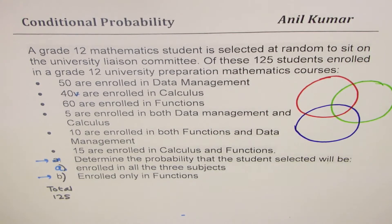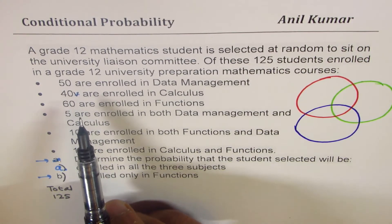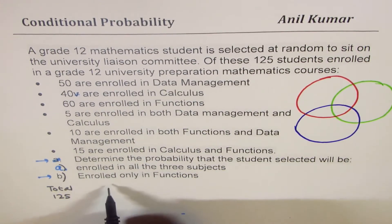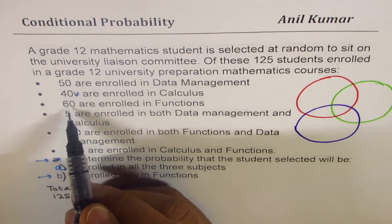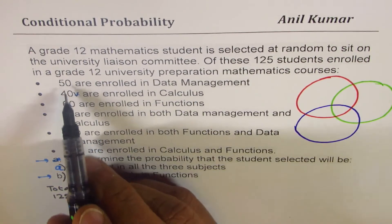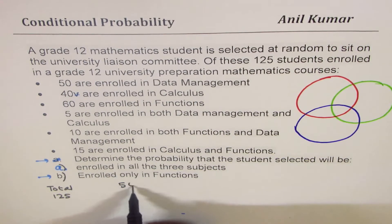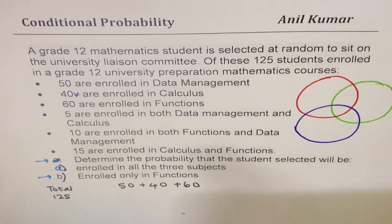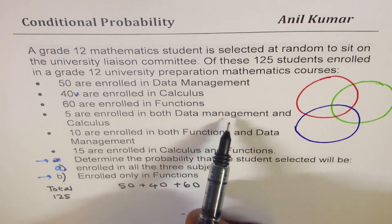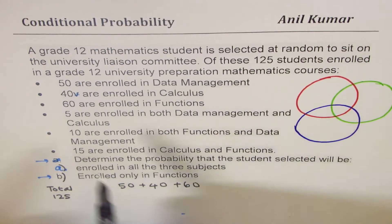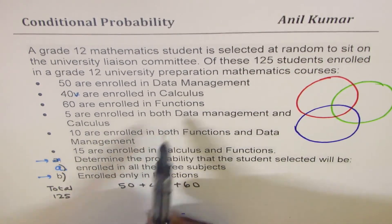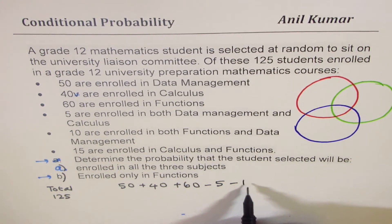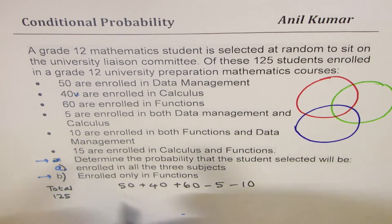What we're given here is, 50 are enrolled in data management. These are single subjects, so we just add them up. We get 50 plus 40 plus 60, and then take away the ones which are in two subjects. Five enrolled in both, so we take away 5, and then we take away 10 because they have been counted twice, and take away 15.